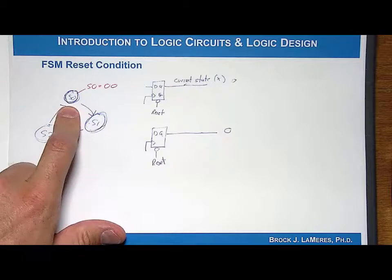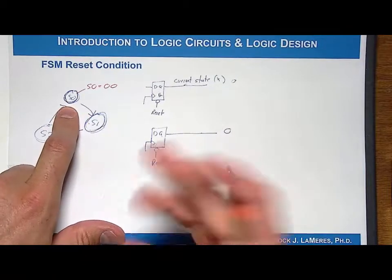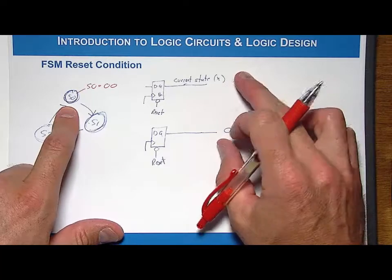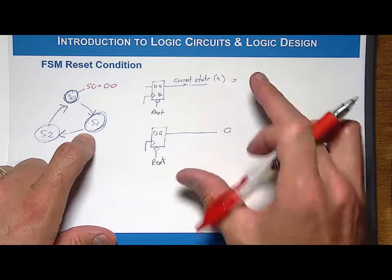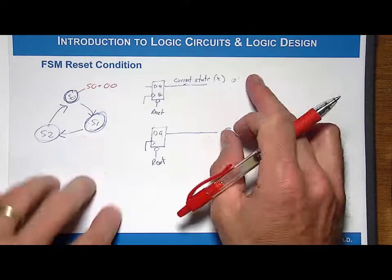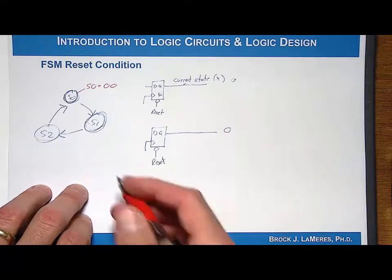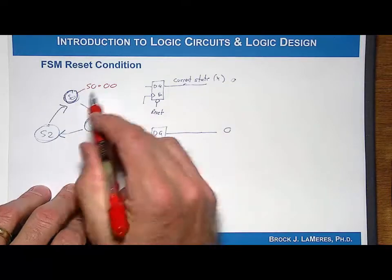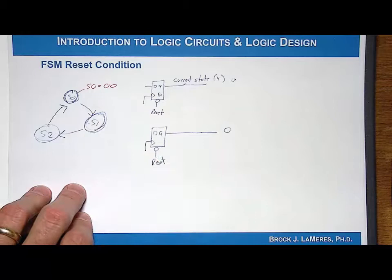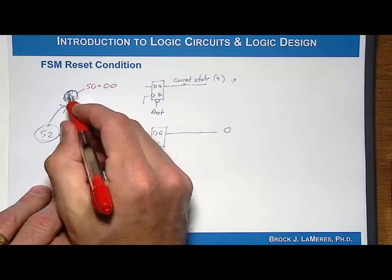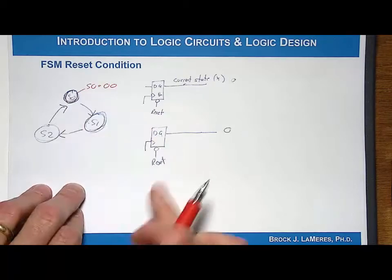We call that the reset state. When you hit reset, it puts those codes on the outputs of the D flip-flops by default, and that's where your state machine starts. So it's up to you to make sure it starts in the right location. One easy approach, if the resets are all wired up, is to always encode your start state with the code 00 — all zeros. Then the reset button will take care of initialization automatically.